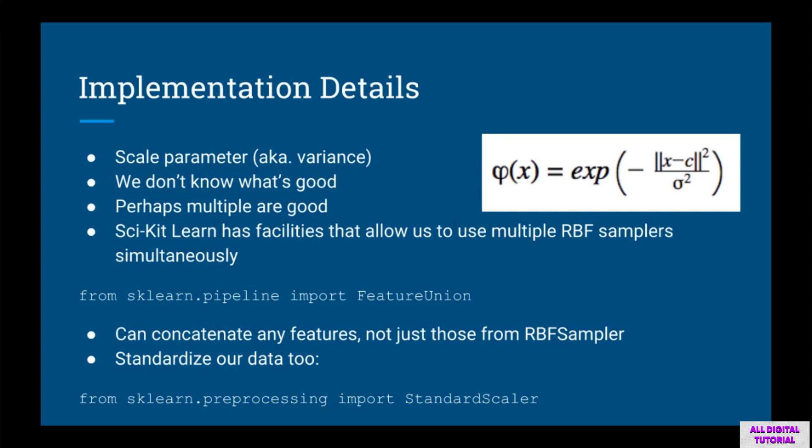For practical implementation details: the RBF kernel has a scale parameter like the variance of a Gaussian. Since we don't know what scale is good, or perhaps multiple scales are good, scikit-learn has a feature union tool that allows us to use multiple RBF kernels with different scales simultaneously. This concatenates individual feature vectors together into one big set of features. We'll also be standardizing the data before applying the RBF kernel using scikit-learn's StandardScaler.